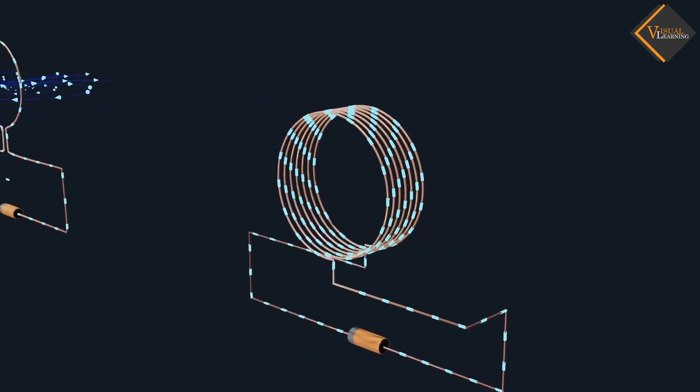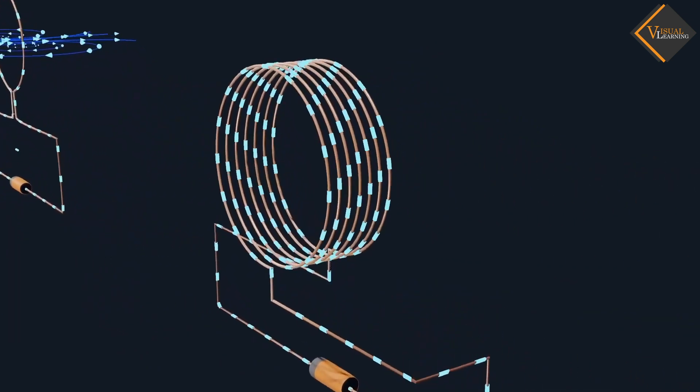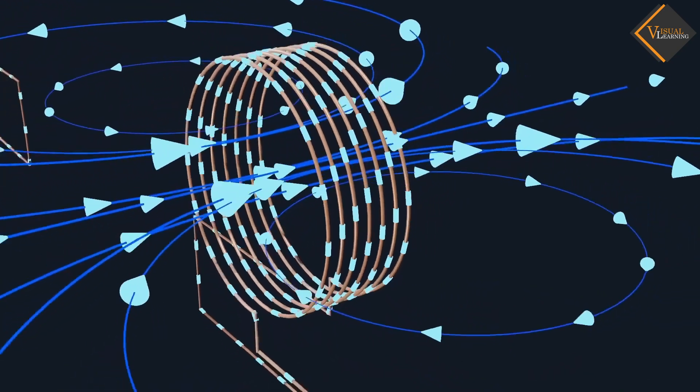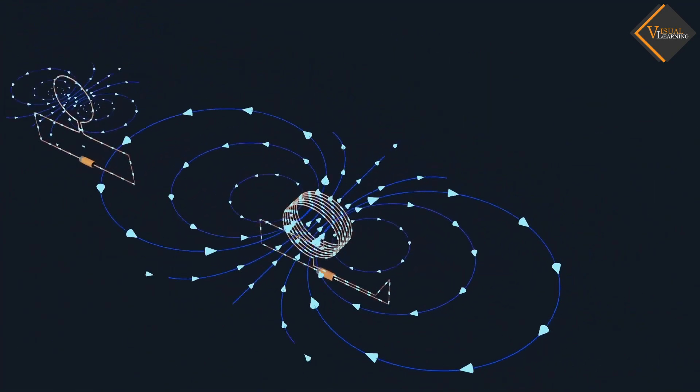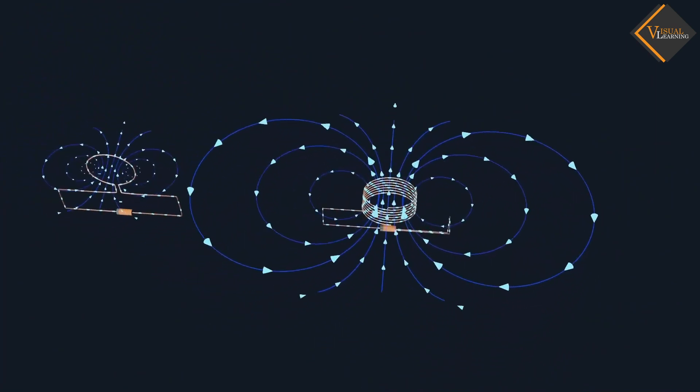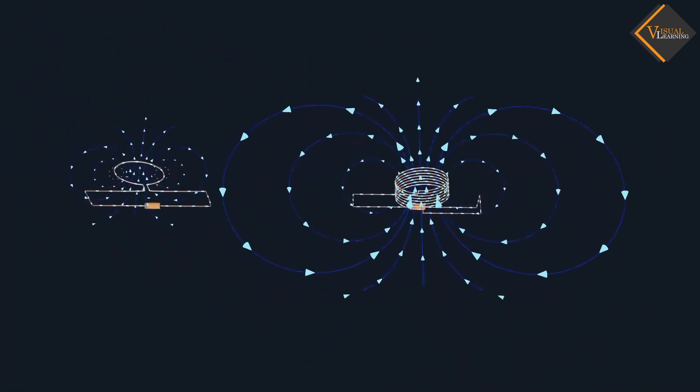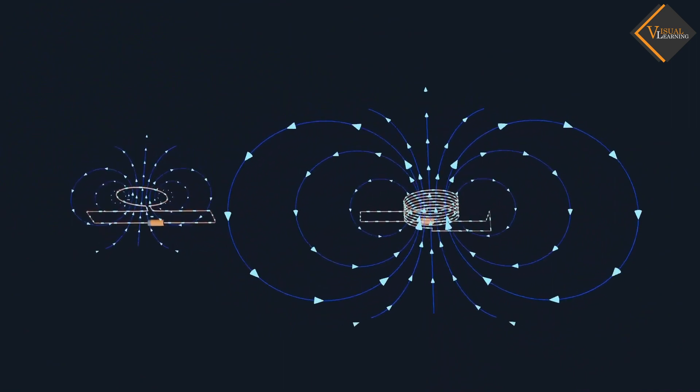Therefore, if there is a circular coil having many turns, the field produced is very large as compared to the field produced by single turn. This is because the current in each circular turn has the same direction and the field due to each turn adds up.